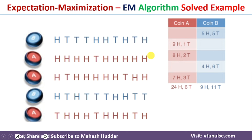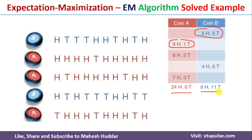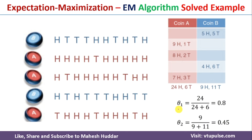To calculate theta 1 and theta 2, we count the number of heads and tails with respect to coin A and coin B. For the first experiment, there are five heads and five tails; since it is coin B, I've written those values in coin B's column. For the second experiment, there are nine heads and one tail, and it is coin A. Once all experiments are recorded, we add up the heads and tails: coin A has 24 heads and 6 tails, coin B has 9 heads and 11 tails. Theta 1 equals 24 divided by 30, which is 0.8. Theta 2 equals 9 divided by 20, which is 0.45.